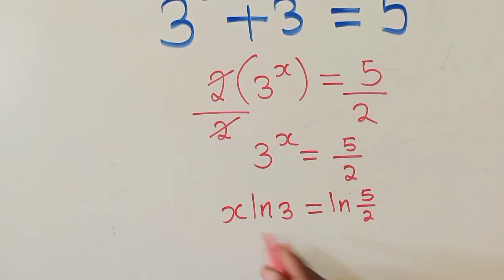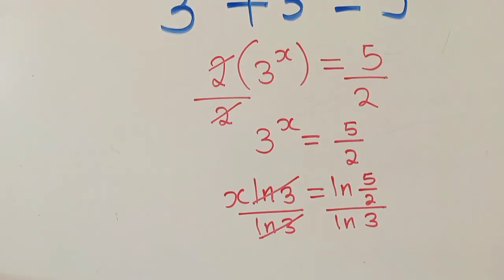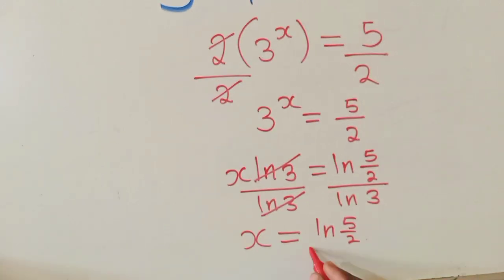The next thing here will simply be to divide by ln 3. Natural log of 3. So here and here, it will cancel, we shall remain with x, which is equal to ln of 5 over 2 over ln of 3. And this is our solution.